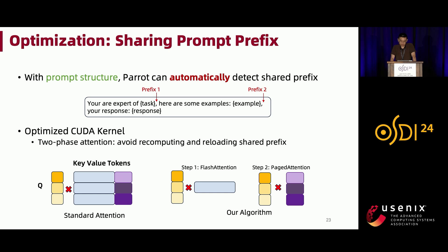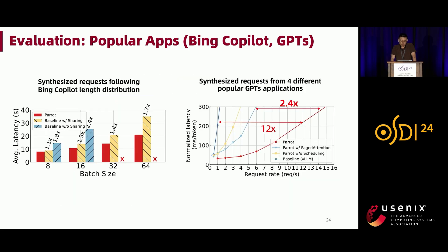With knowledge of prompt structure, Parrot can automatically detect the shared prefix at the boundary of semantic variables. Instead of checking every token, it only checks the boundary of semantic variables to detect whether multiple requests can share the same prefix. We also have an optimized CUDA kernel using two-phase attention to avoid repetitive memory loading and computation. Our evaluation on production prompts shows up to 1.7x latency reduction and up to 12x throughput improvement. Even compared with paged attention, repetitive storage is avoided, and Parrot can still achieve 2.4x throughput improvement by avoiding repetitive memory loading and computation.